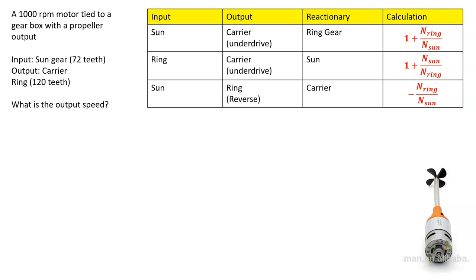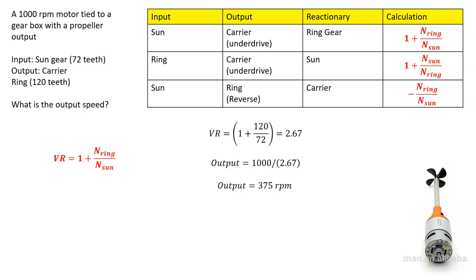First we are going to look at the sun as the input gear. So we've got the sun as the input gear: one plus the number of teeth on the ring over the number of teeth on the sun. Plugging in our variables — one plus 120 teeth on the ring divided by 72 teeth on the sun — we end up with a velocity ratio of 2.67. The output is 1,000 RPM divided by the velocity ratio, giving an output of 375 RPM.